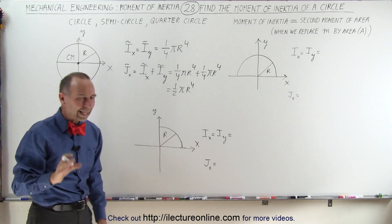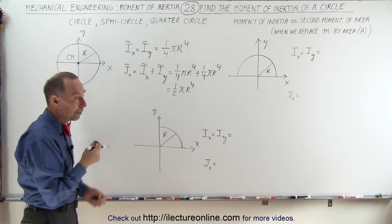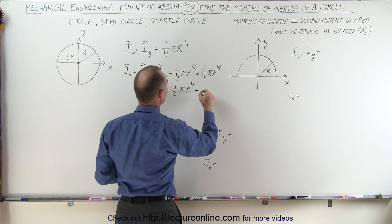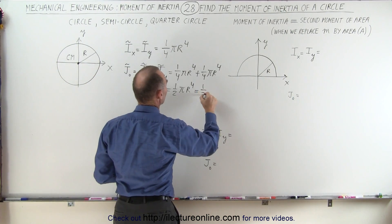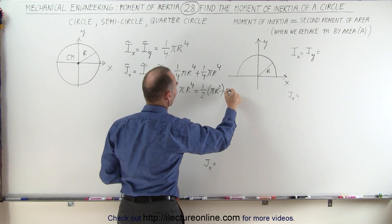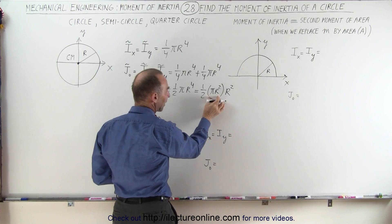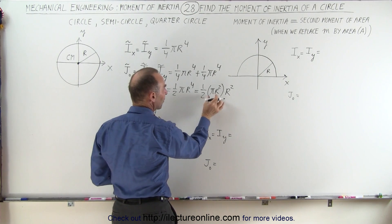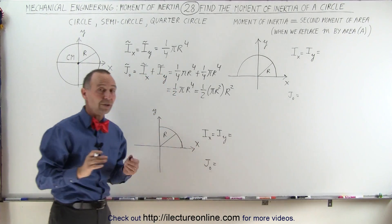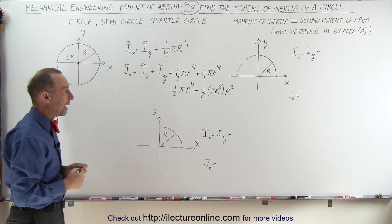Now that doesn't quite yet look like the moment of inertia of a cylinder, but when we pull out the area of a circle — which is pi r squared — we have an r squared left. Notice that if this were the mass of the object, we get one-half the mass times r squared, which is the moment of inertia of a circle or a cylinder that has mass.